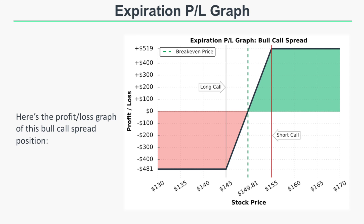The maximum profit potential is $519. That comes from the ten-dollar spread width — the $155 short call minus the $145 long call — less the $4.81 debit we paid, giving $5.19 of maximum profit potential times 100, or $519. This maximum profit is realized at any stock price greater than $155 at expiration. If the stock is above $155, the spread can only be worth $10 — since we own the 145 call and are short the 155 call — and since we paid $4.81, the maximum profit is $519.